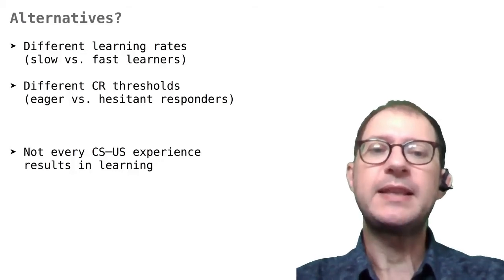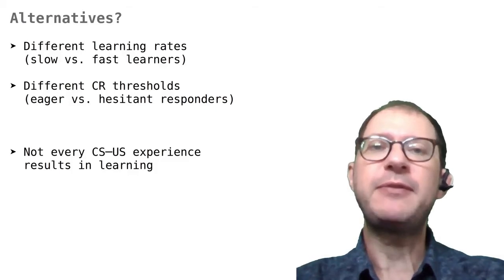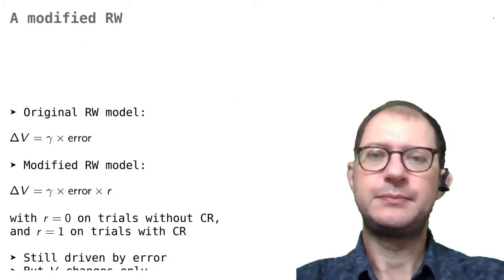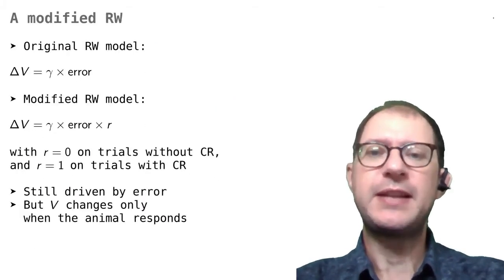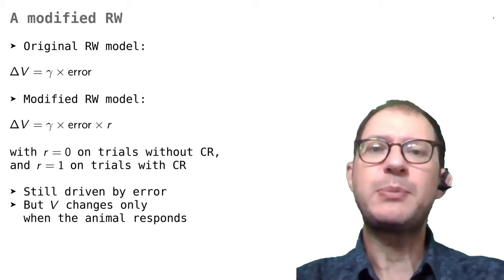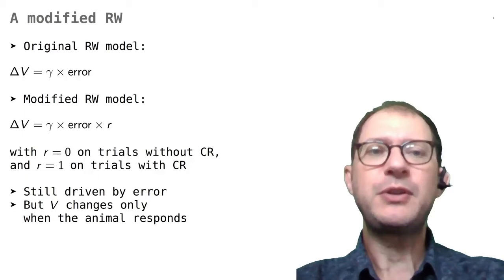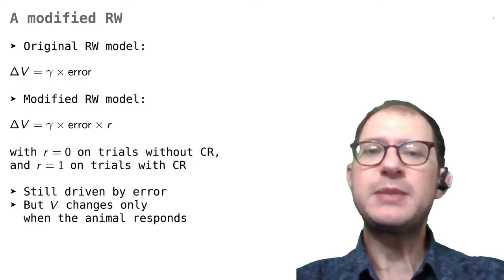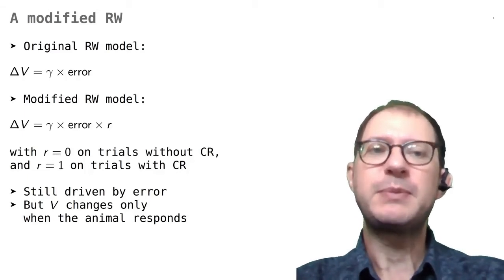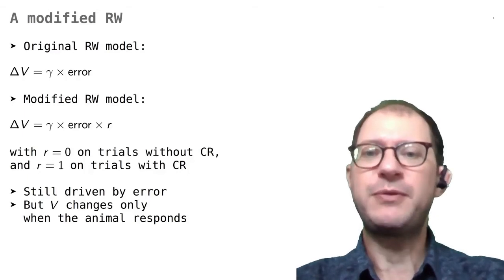What worked best is a different modification of RW where animals do not learn at every CS-US experience. Let's see how we can understand this. The change is actually pretty simple. The top formula here is the RW learning formula that says that learning is proportional to error. It has been covered in previous lessons and it should be familiar by now.